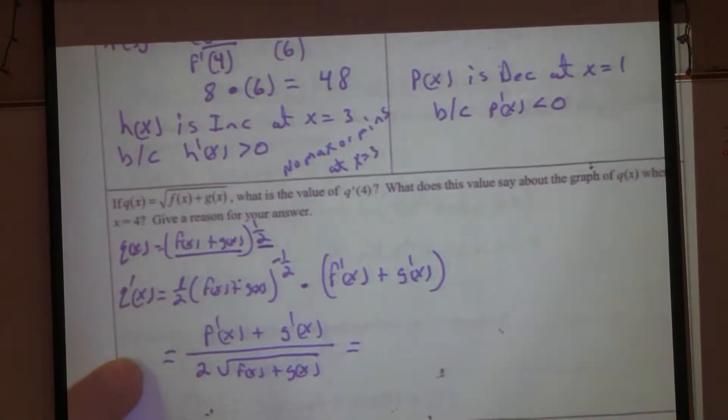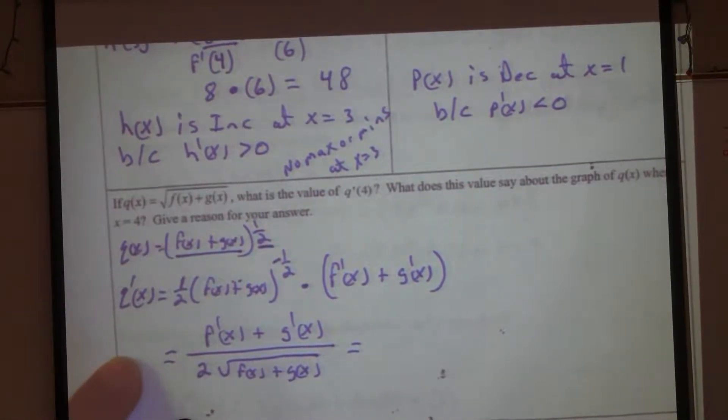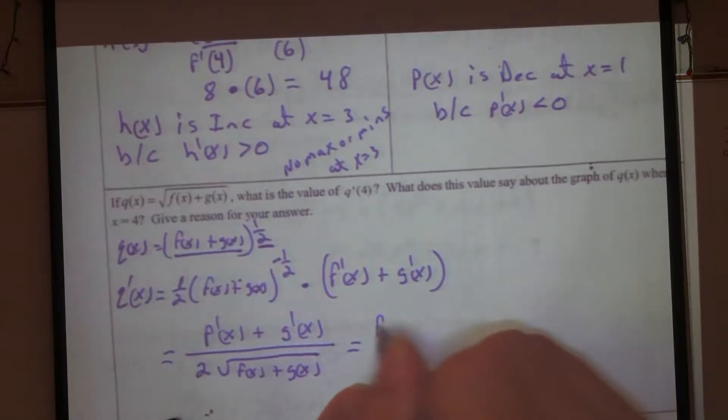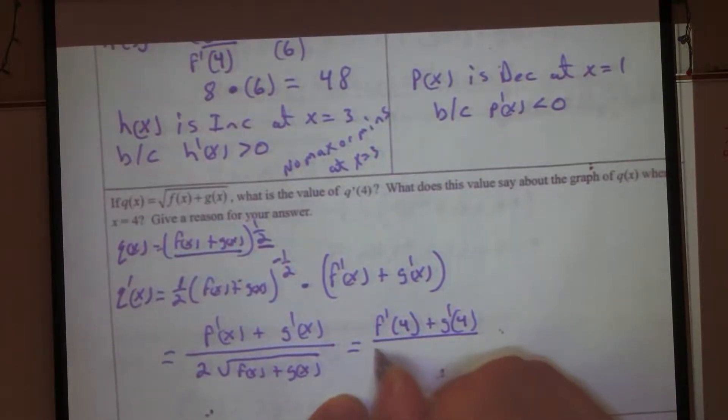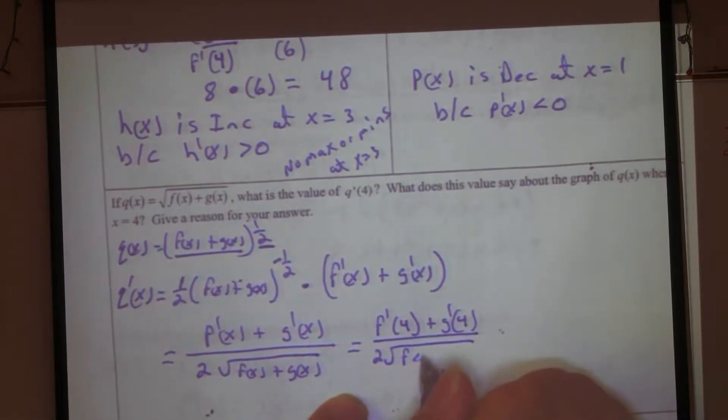That's my derivative. Let's evaluate it at what number? 4. So I want to know f prime of 4 plus g prime of 4 divided by 2 times the square root of f of 4 plus g of 4.